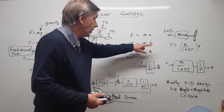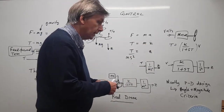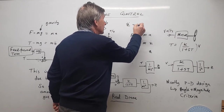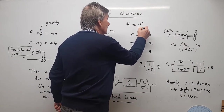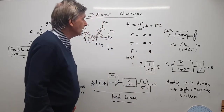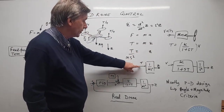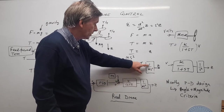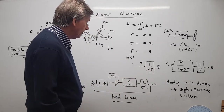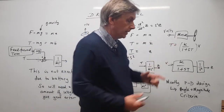So z-double-dot equals d²/dt² times z, which is s²z. We can replace z-double-dot by s²z, move the s² over, and that gives a transfer function: z equals (1/ms²) times T, where T is the thrust. That's our starting position for the model. There are also small but powerful motors on the drone.